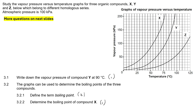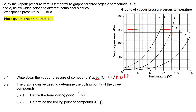It says write down the vapor pressure of compound Y at 90 degrees. So here's compound Y — it's this line over here. At 90 degrees, going across from 90 on the temperature axis up to Y's line and then across, we get 150 kPa.